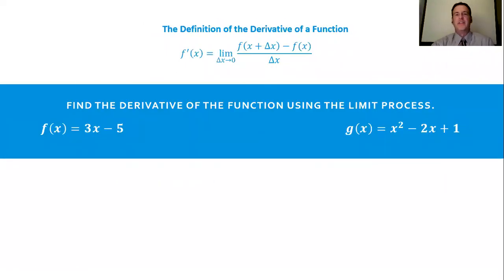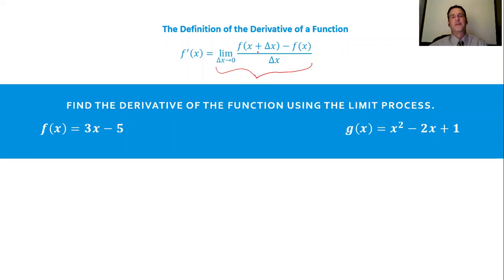Here's what I got. This is the definition of the derivative of a function — this is what we talked about in the past. It's basically the slope of a secant line as it becomes a tangent line due to your delta x going to zero, and we represent that through symbols called f prime of x.